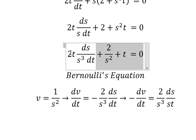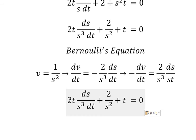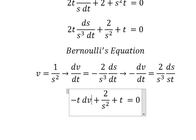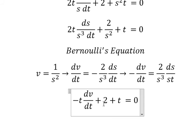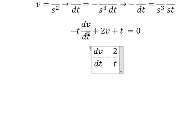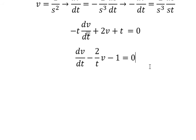Now we need to change everything here. We replace dh over dt with the expression involving 2 over h to the power of 3, and change it to negative dv over dt. We also substitute v for the corresponding term. Next, we divide both sides by negative t, and put negative 1 to the right.